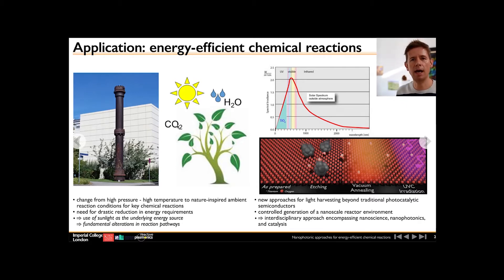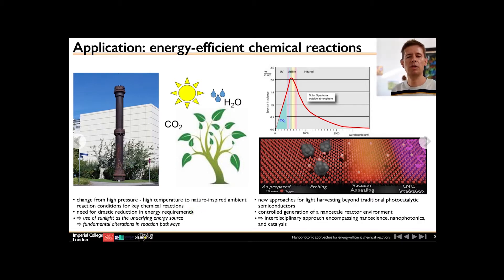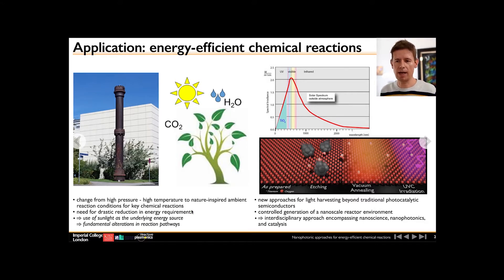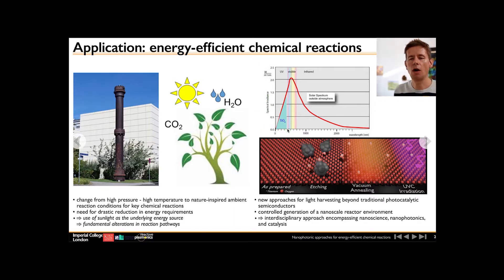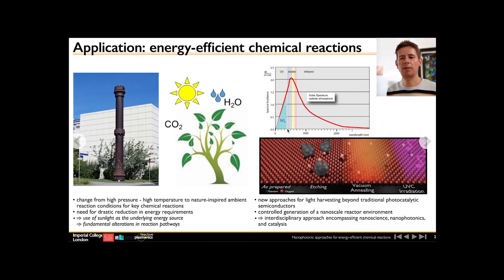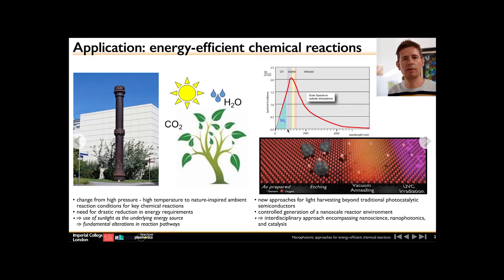The key requirements are: we need to use sunlight as the underlying energy source, and this will require that we fundamentally alter the reaction pathways of chemical reactions in order to reduce the energy requirement. With traditional photocatalysis such as TiO2, we have a problem because the band gap is in the UV and we are only able to harvest a very small amount of the solar spectrum.